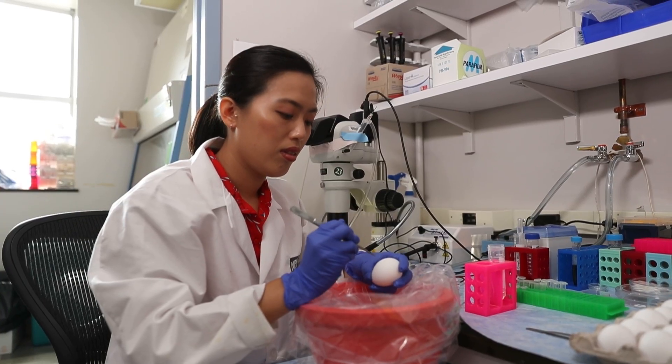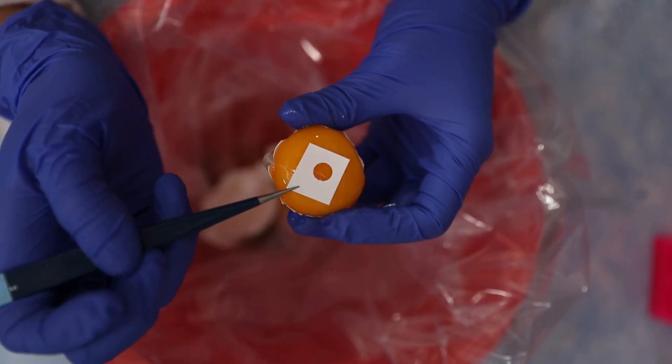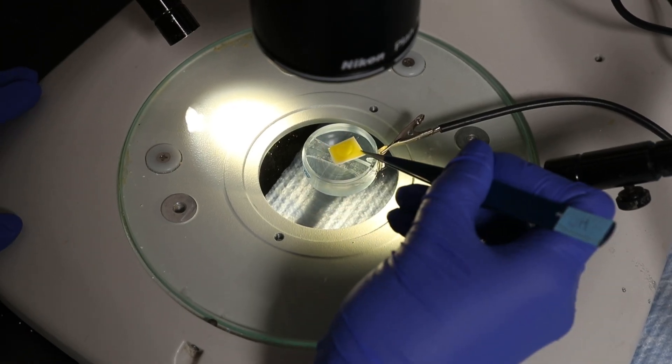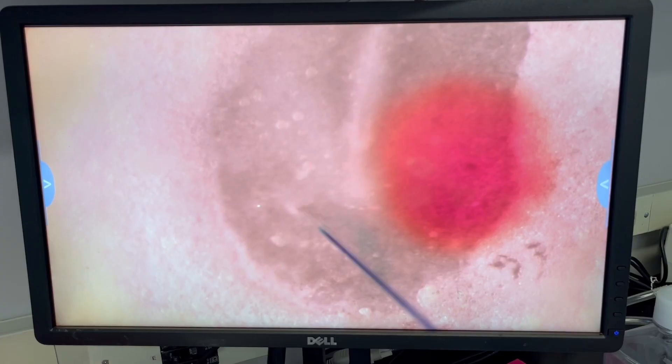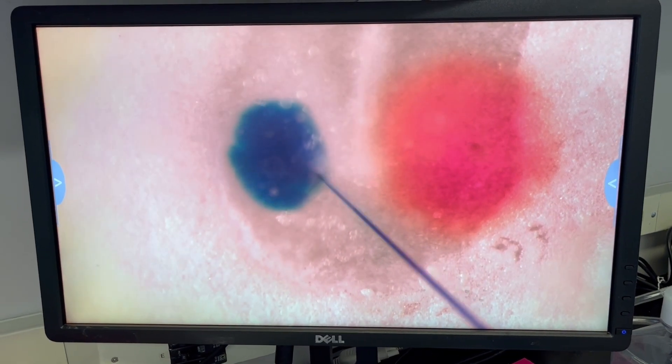Our research is based mainly on three model systems. For our in vivo studies, when we want to look at what actually is happening in a real embryo, we use chicken embryos because it's such a great model for early embryo studies. We get very accurate understanding of what is going on at each stage.